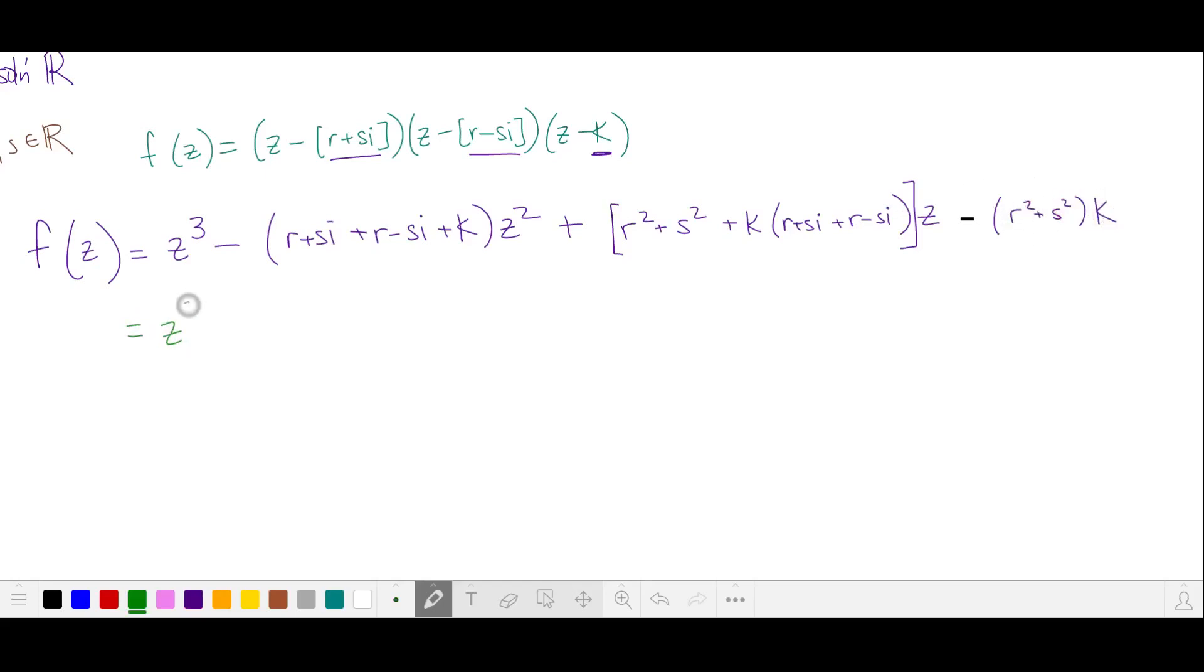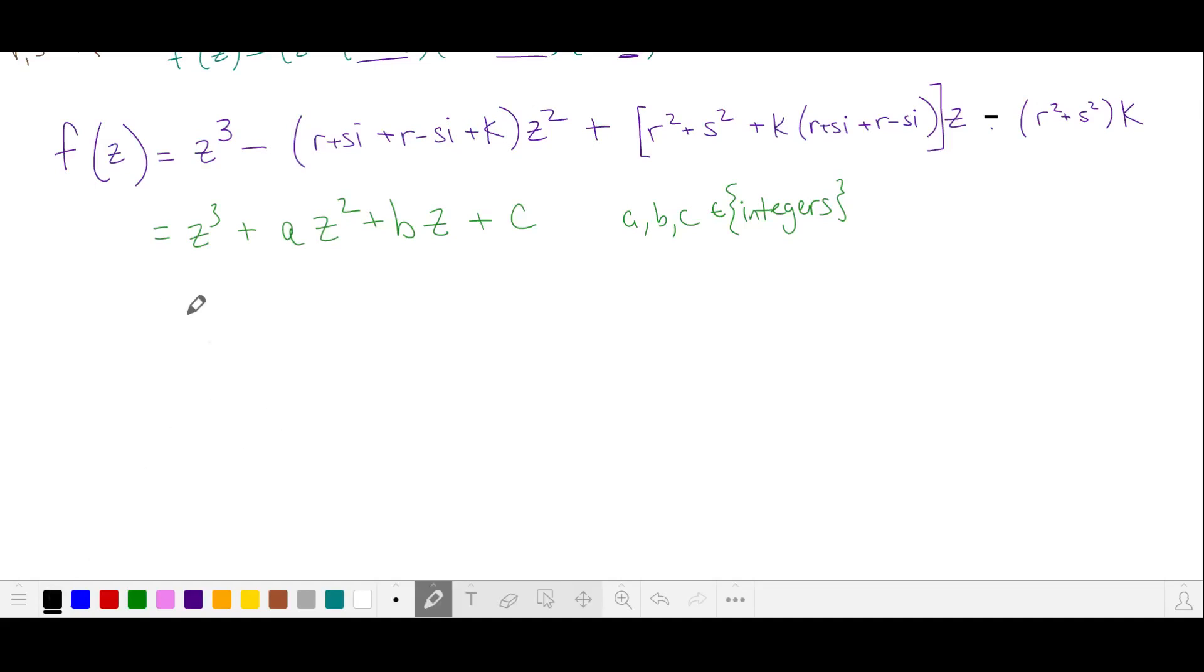These three coefficients are going to correspond to our integers a, b, and c. So let's write up our equalities. a is the coefficient of z squared. And I'll go ahead and combine like terms. So this is 2r plus k.